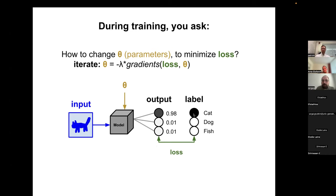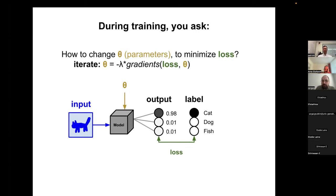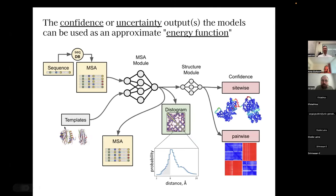If we really want the output to be a cat, we can compute gradients on how to update the inputs to get our desired label. This is the whole idea behind inverting a model: we take a model — this could be AlphaFold — and instead of optimizing the model parameters, we literally just optimize whatever input the model takes. We could optimize the templates, optimize the MSA, and then our loss could be any of these output functions from AlphaFold.